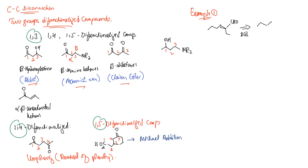Since the molecule is an alpha-beta unsaturated aldehyde, we are certain that it has been produced through aldol condensation. Therefore we go for functional group interconversion in order to get a hydroxyl group beta to a carbonyl group, and then we disconnect the molecule at that point — this is carbon number 1, carbon number 2, and carbon number 3, giving us a 1,3 disconnection.